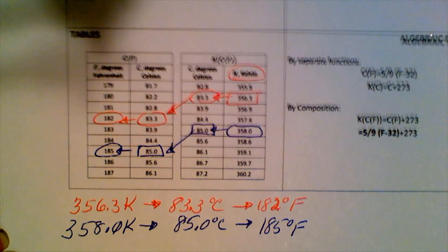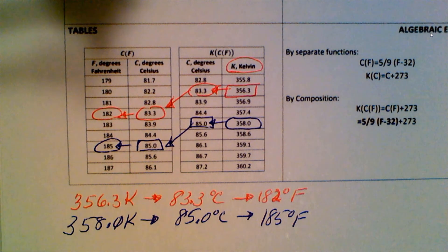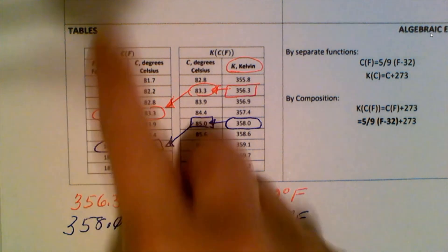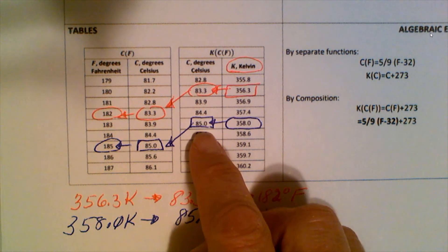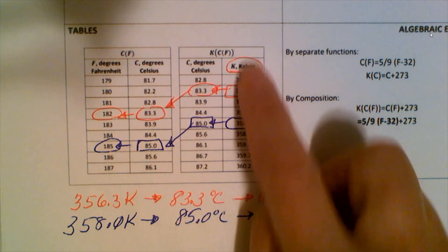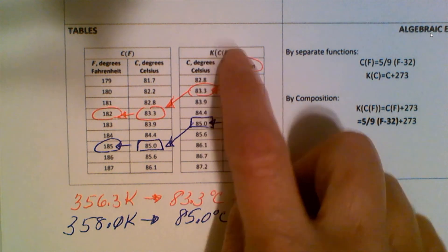Essentially, what we're doing with inverses is going backwards through our tables. With composition of functions, we started with one value, put it into a function machine, and got an output. We took that output as input and got the final output by going through another function.